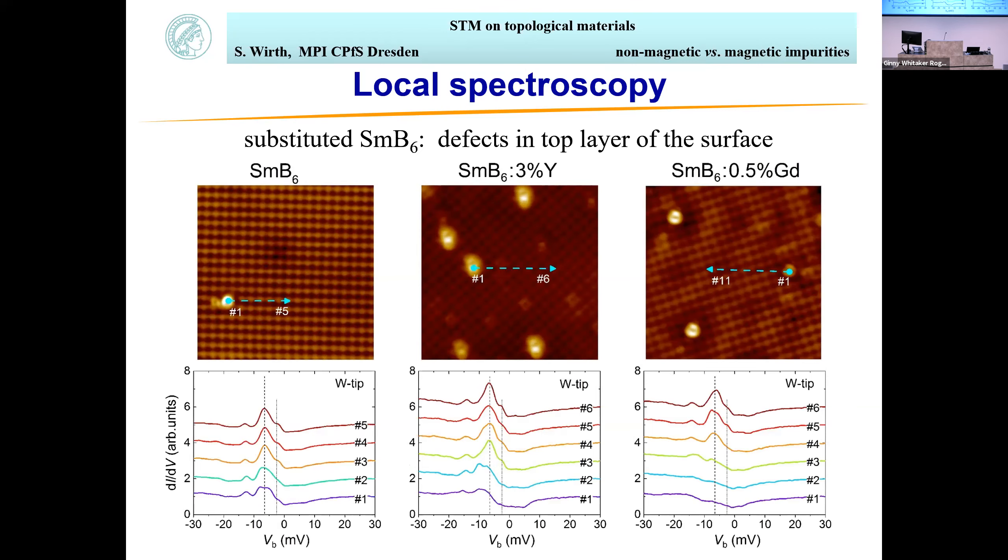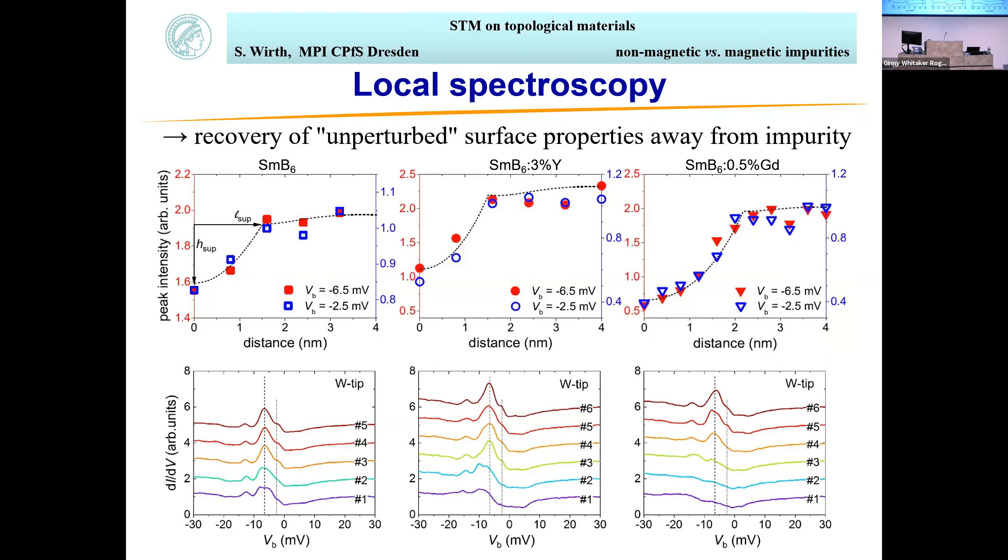If you take tunneling spectra at or away from defects, sufficiently far away everything looks alike. As you approach a defect in pure samarium hexaboride, there's a little bit of the peak chopped off, but that's not much. In contrast, at the gadolinium impurity the peak is almost completely gone. It's not a gap, so there's some bulk contribution, but it's very much reduced. For the impurity in pure SmB6, there's about 25% reduction, for yttrium a little more, but the real action is for gadolinium with 75% reduction.